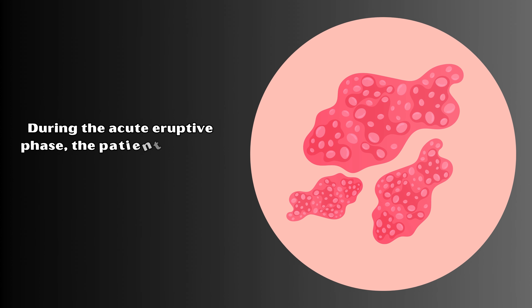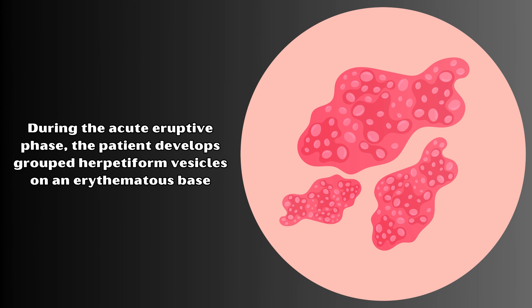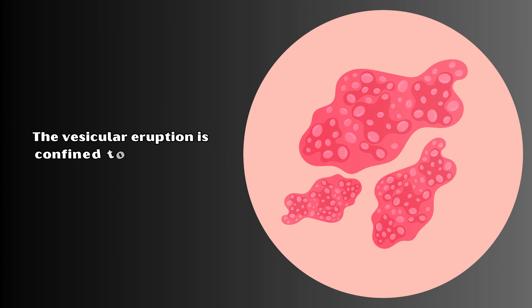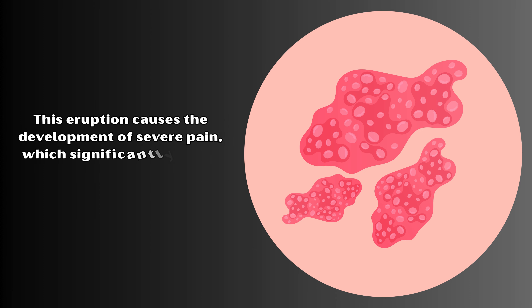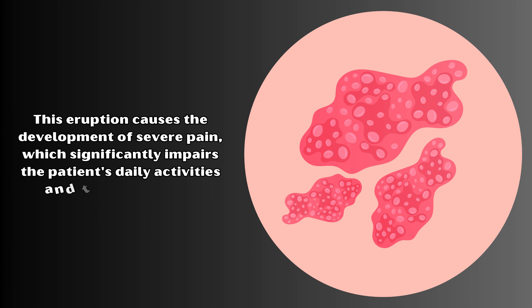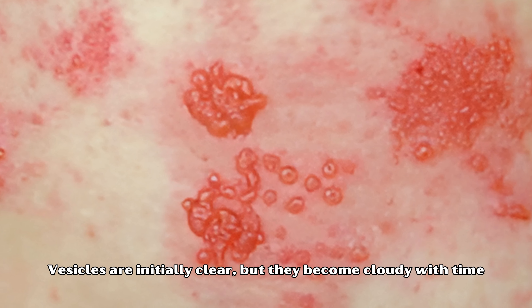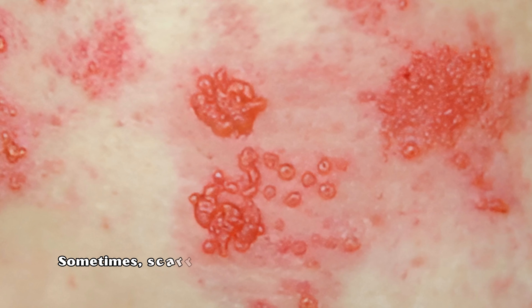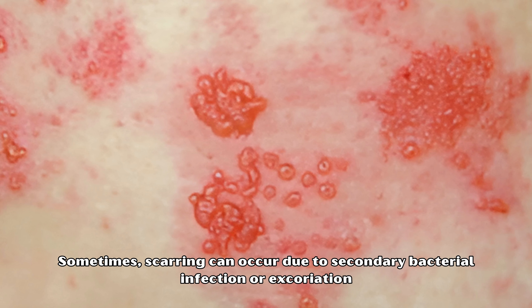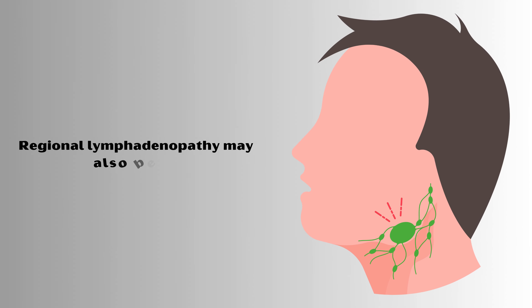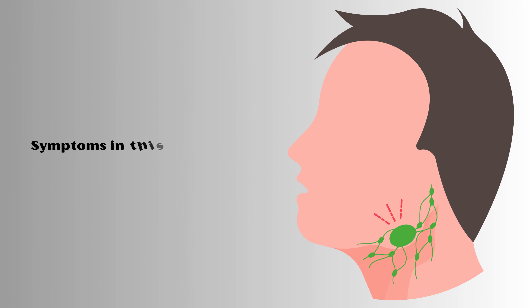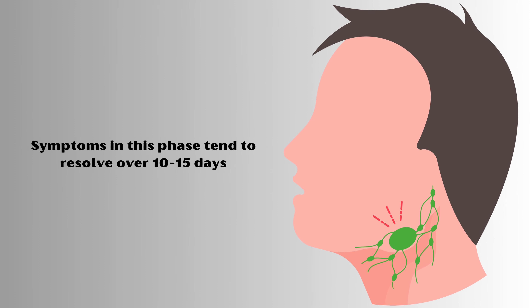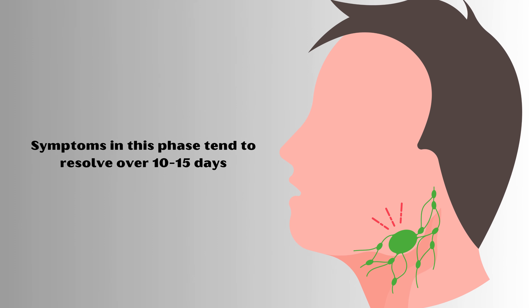During the acute eruptive phase, the patient develops grouped herpetiform vesicles on an erythematous base. The vesicular eruption is usually confined to a particular dermatome, and causes severe pain which significantly impairs the patient's daily activities and quality of life. Vesicles are initially clear but become cloudy with time. Eventually they rupture, leaving crusts on the affected region. Sometimes scarring can occur due to secondary bacterial infection or excoriation. Regional lymphadenopathy may also be seen. Symptoms in this phase tend to resolve over 10 to 15 days; however, complete healing of lesions may require up to a month.